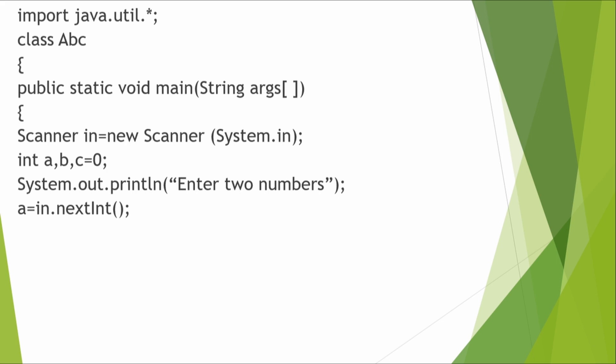Then we write: a = in.nextInt(); Here 'in' is the object of the predefined class Scanner. We'll learn about objects in other videos. nextInt() is a predefined function inside the predefined class Scanner — it is an input statement to take input into a variable. Wherever you need to take input in a variable, you write nextInt(). We use nextInt because it's an integer variable. If the data type changes, the function also changes — for example, for double it would be nextDouble().